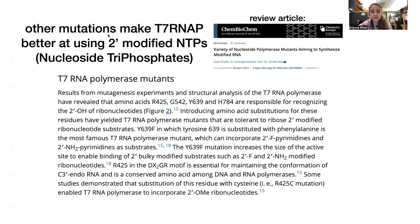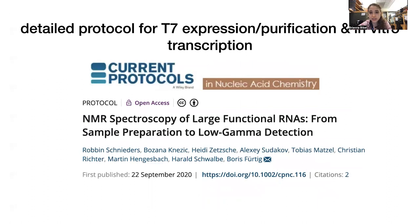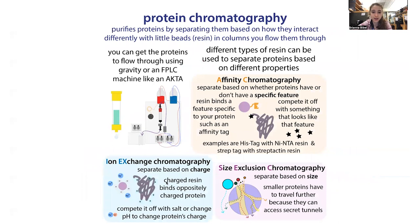A detailed protocol for T7 expression, purification, and in vitro transcription is available in a linked article — the name sounds scary but it has great detailed protocols for all of this, including how to express and purify T7 polymerase. Basically it's a simple bacterial overexpression with a His-tag — a string of histidines that helps purify it more easily — followed by size exclusion chromatography to further polish things up.